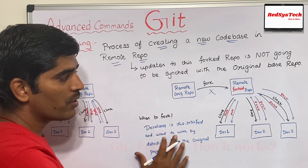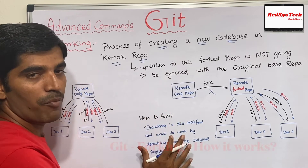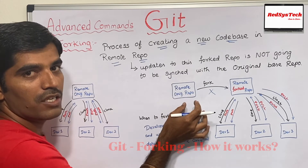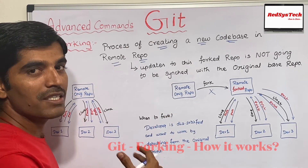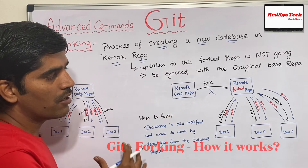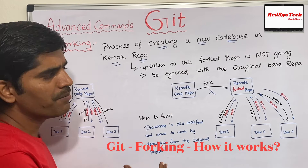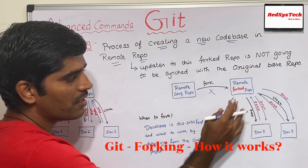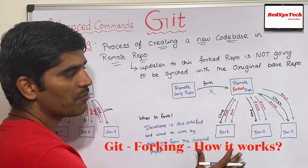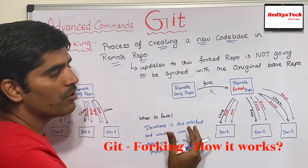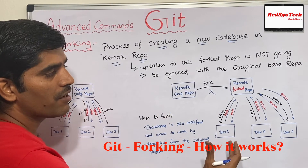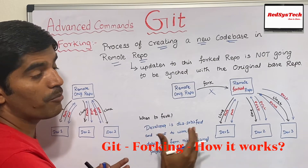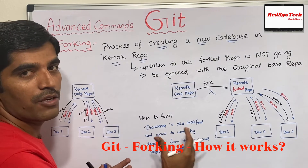Updates to the forked repository are not going to be synced with the original base repository. Typically, if one team is doing development on the original remote repository and some part of the team is not satisfied with the way the project is going, they can create a forked repository and work on something differently to see how their approach compares.